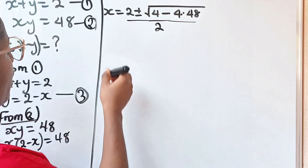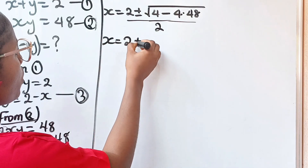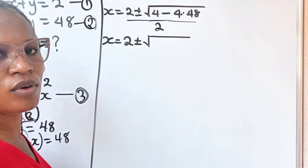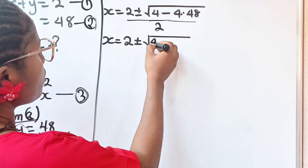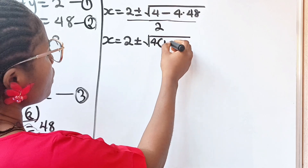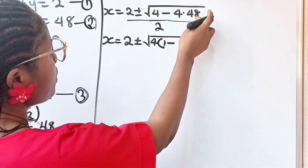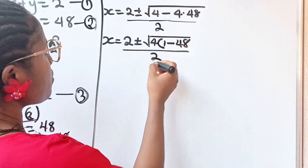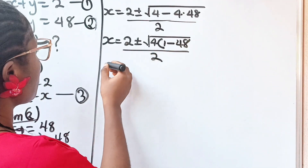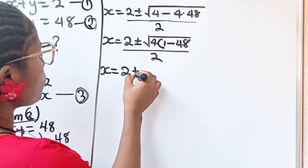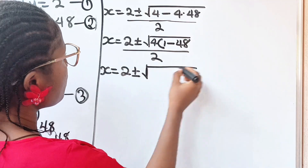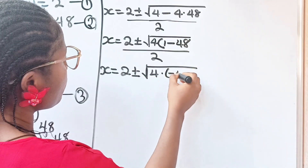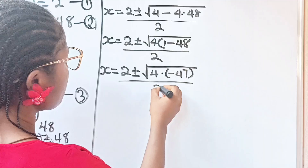So x equals 2 plus or minus the square root of — now 4 is common, so factoring out 4: we get the square root of 4 times 1 minus 48, giving the square root of 4 times minus 47, all divided by 2.